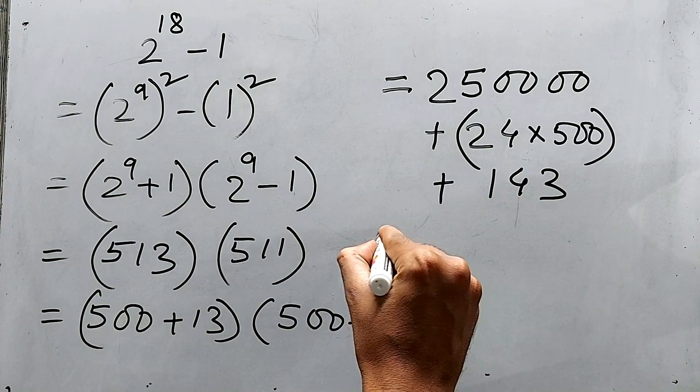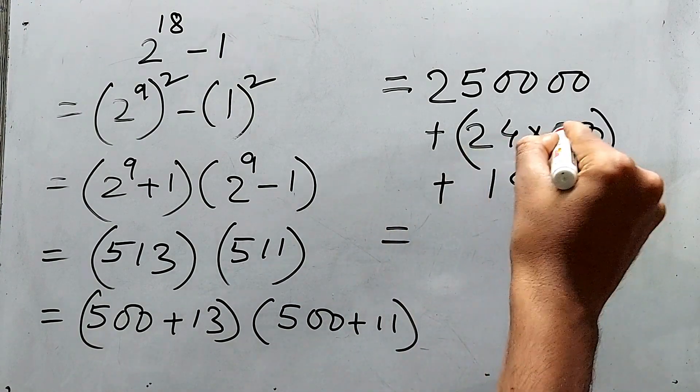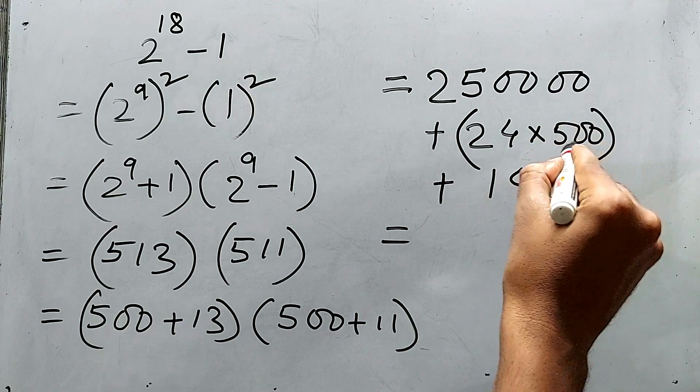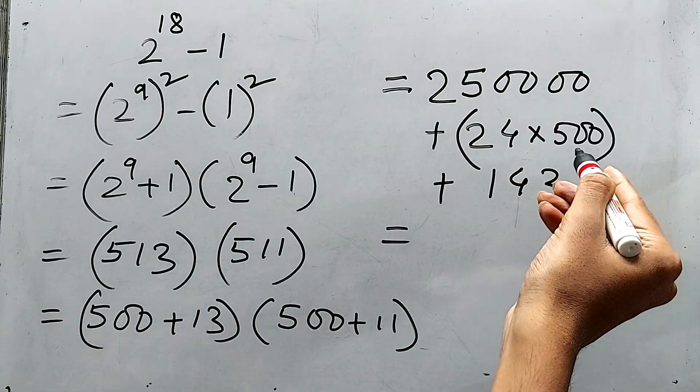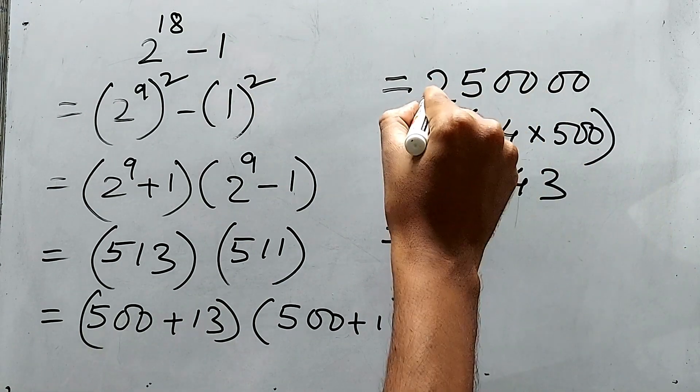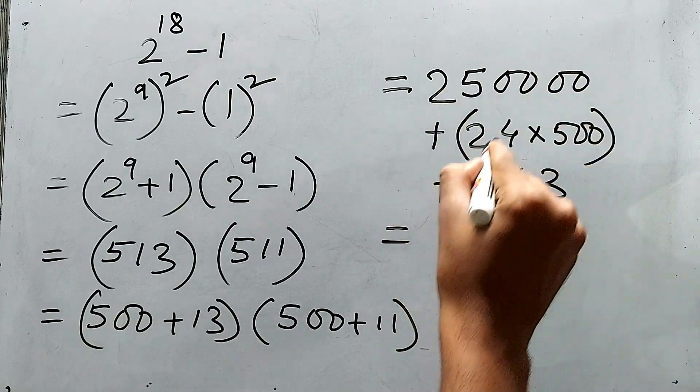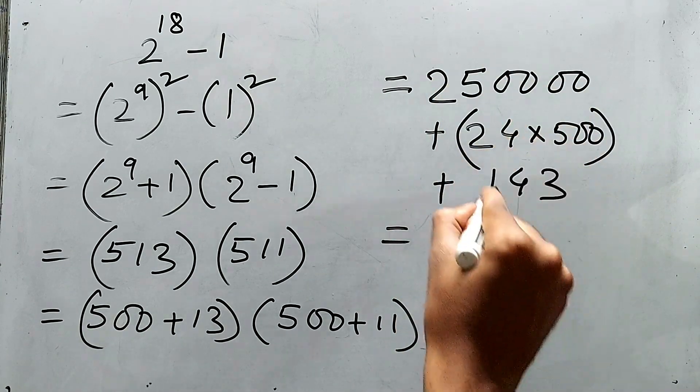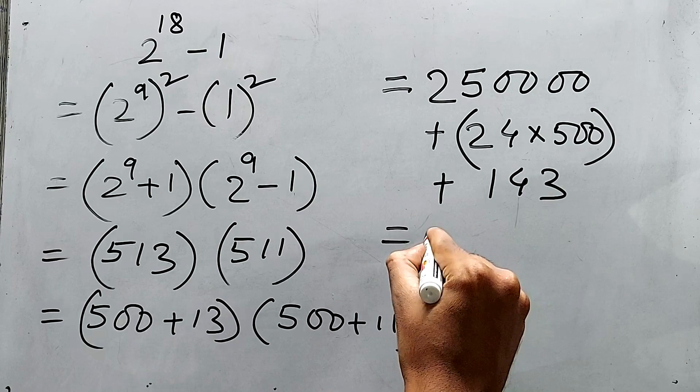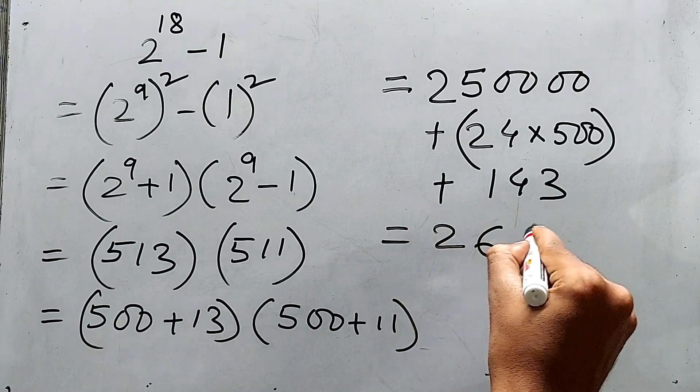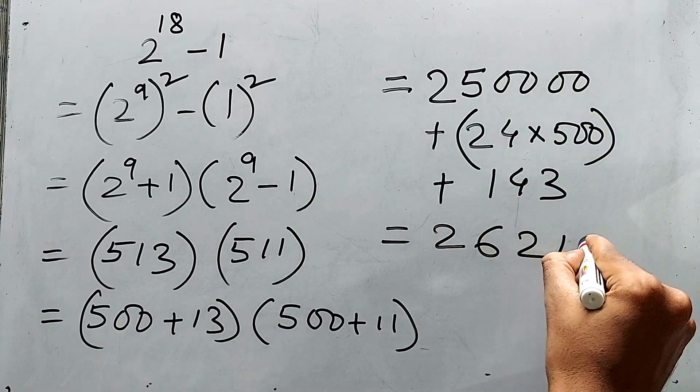From this part we are getting 24 into 500, that is 12,000. So 250,000 plus 12,000 plus 143, the final result will be 262,143.